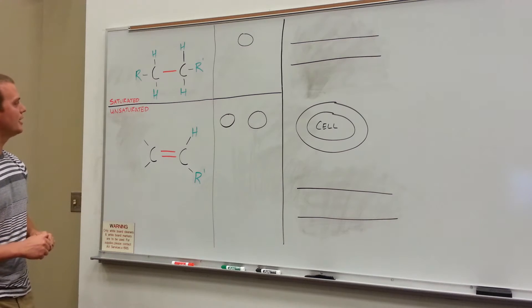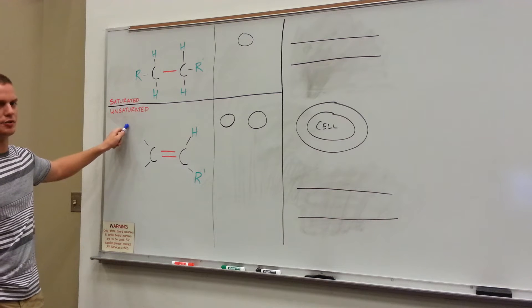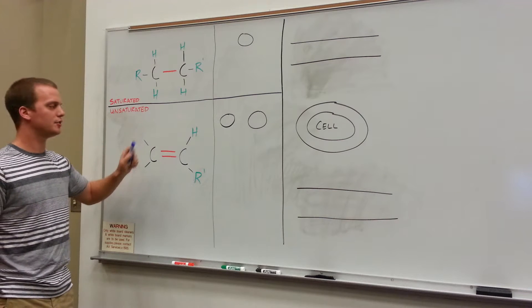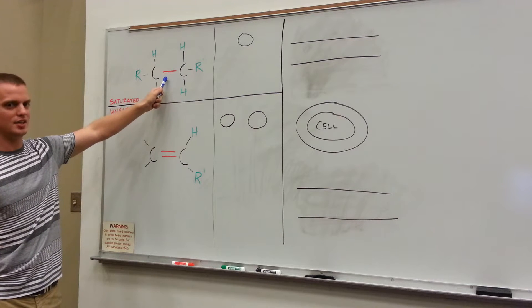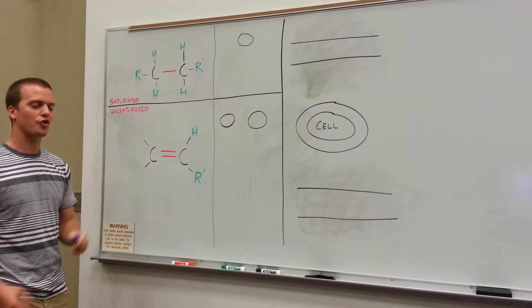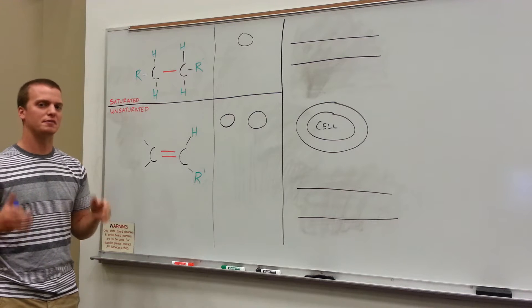Now the two big categories of fats are saturated and unsaturated, and what they're talking about when they say those two things are the kind of carbon-carbon bonds that are included in the chain, or in the carbon chain in the backbone of these fatty acids.